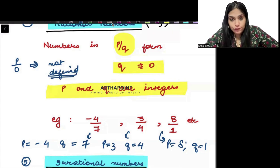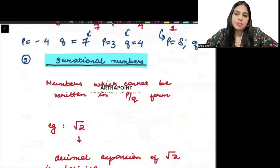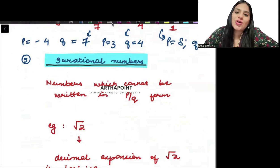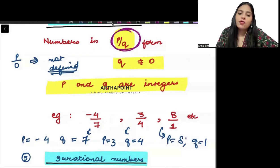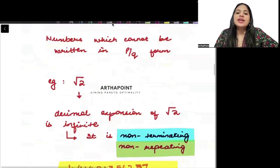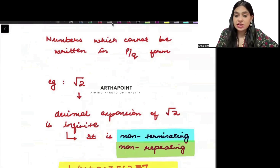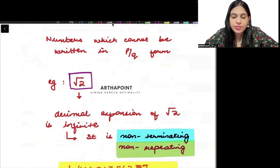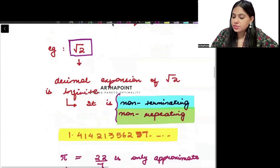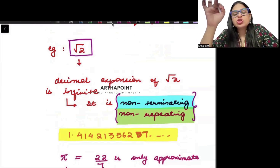I am saying anything in P by Q form, Q not equal to 0. Next we have irrational numbers. Irrational numbers are those numbers which cannot be written in P by Q form. What I can write in P by Q form is rational; what I cannot write in P by Q form becomes irrational. For something to be irrational, we want that number to be non-terminating and non-repeating — the decimal should not stop and the decimal should be non-repeating.